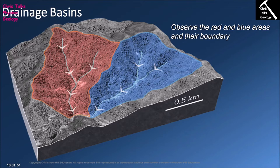Geologists, especially sedimentary geologists, spend a lot of time thinking about running water, and arguably the main way in which water moves across the surface of the Earth is in the form of rivers. So that obviously brings us to the next question: what is a river?